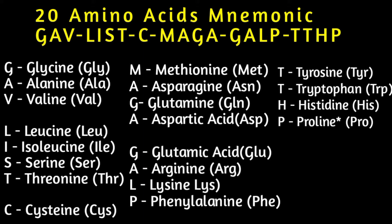All except proline are alpha amino acids — you can see I put an asterisk on it. Notice the three-letter abbreviations: isoleucine is ILE, not the first three letters. Asparagine is ASN, not ASP — ASP is for aspartic acid. Glutamine is GLN, while glutamic acid is GLU.